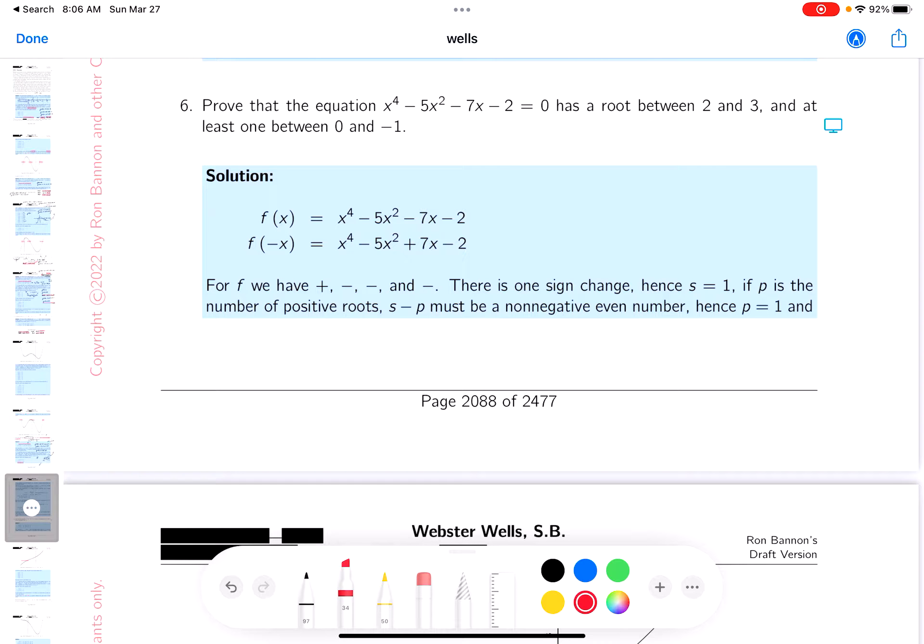Okay, for number six, it's a fourth-degree polynomial. The leading coefficient is positive, so I know it looks something like this over here. And what happens in the middle, that's up to my analysis at this point.